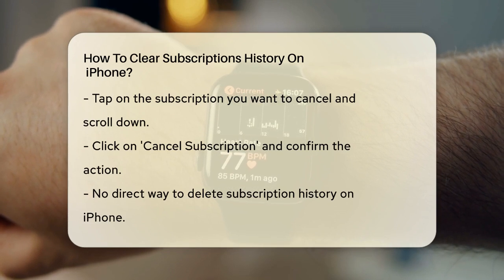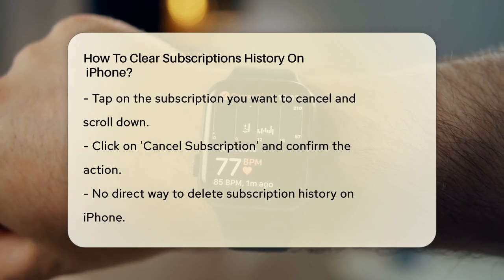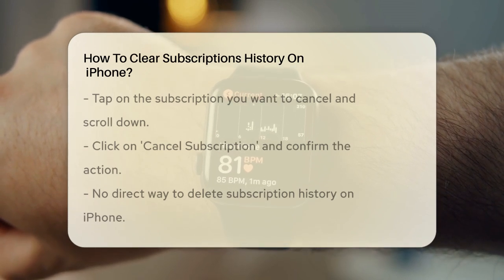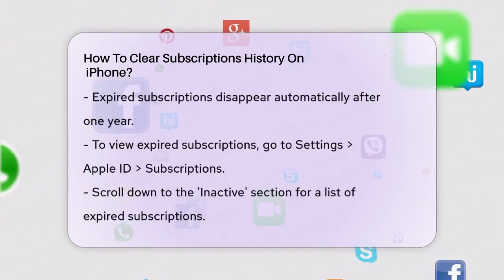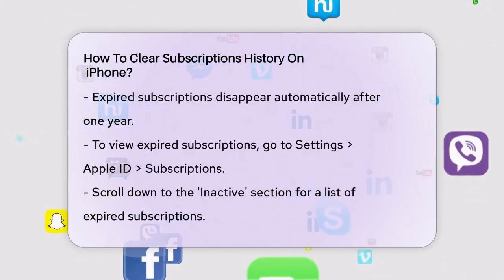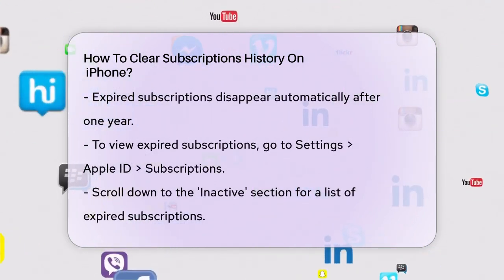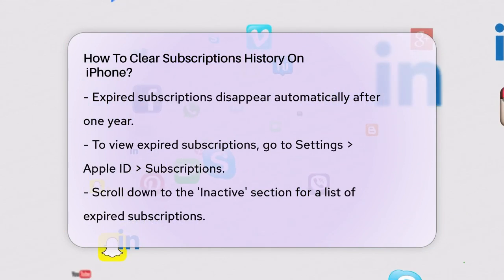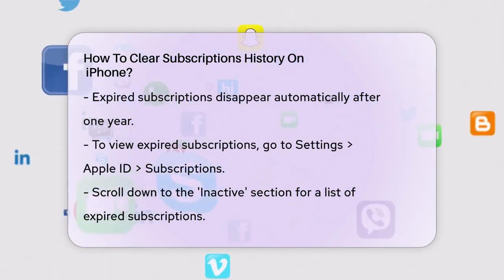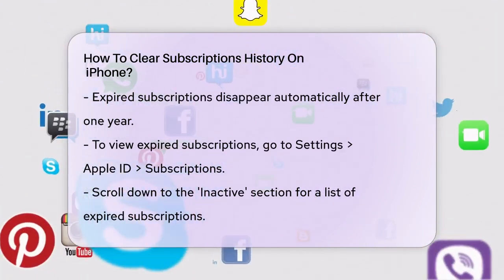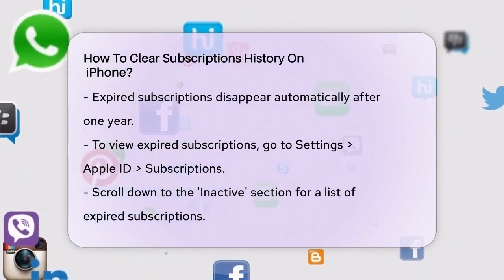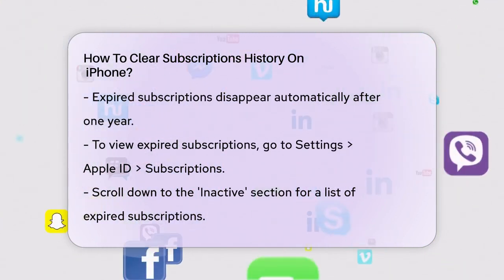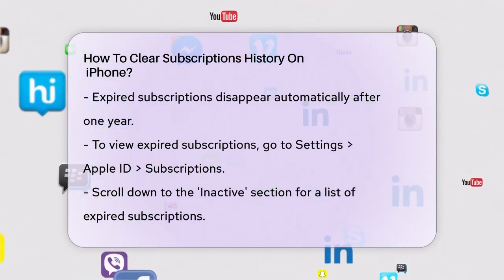If you want to view your expired subscriptions, you can go to the Settings app, tap on your Apple ID, and then select Subscriptions. Scroll down to the Inactive section, and you'll see all your expired subscriptions listed there. But again, you can't remove them manually — you just have to wait for that year to pass.